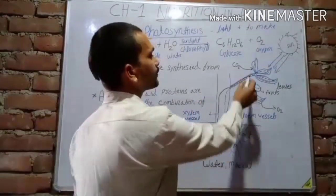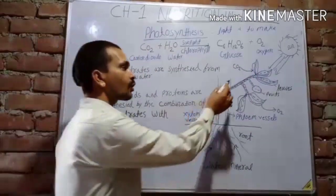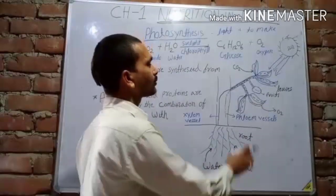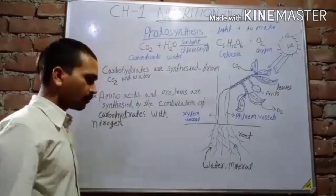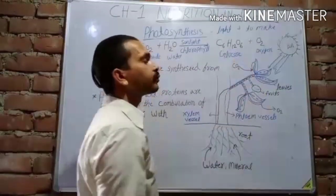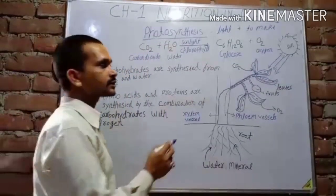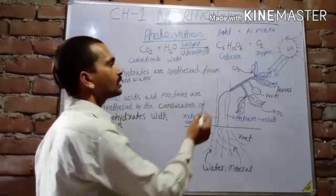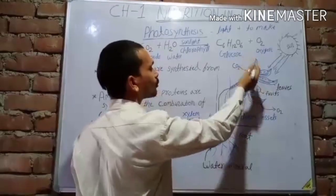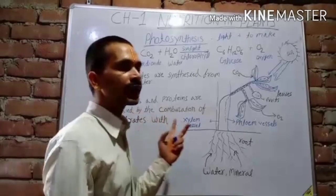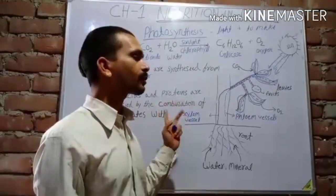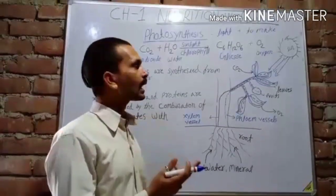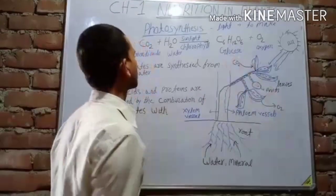Leaves are known as the kitchen of the plant and the food factory of the plant. Why? Because leaves make food for the plant and produce food for the different parts of the plant. So there are two names for leaves: kitchen of the plant and food factory of the plant.